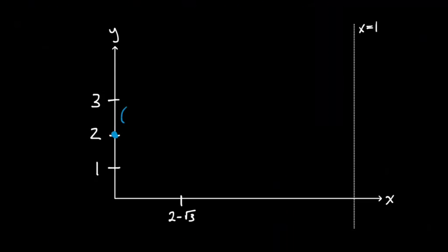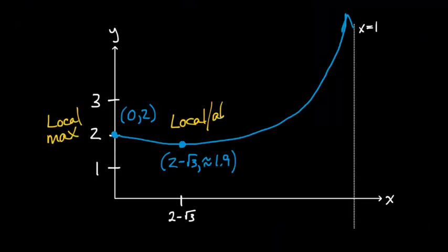here is a graph of the function, which I kind of cribbed from Wolfram Alpha, I'll admit. And here you can see that the function starts at 0, 2. It decreases a little bit towards that global min, and then it shoots up towards that asymptote. And so we have a global min, one local max, no global max.